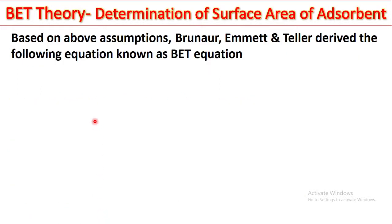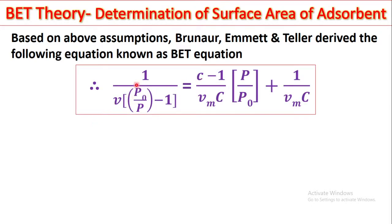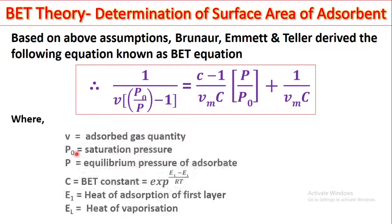Now, based on this assumption, Brunner, Emmett and Teller derived the following equation known as BET equation. This is the equation: 1 upon V into bracket P0 upon P minus 1 is equal to C minus 1 upon Vm into C P upon P0 plus 1 upon Vm C where the V stands for adsorb gas quantity or the volume of adsorbate,